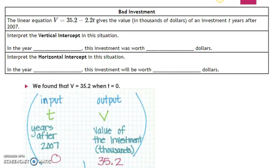So let's take a look at our big ordered pair. We have our input and our output. The input variable is t, the output variable is v. The input variable represents years after 2007, and the output variable represents the value of the investment in thousands. So when t equals zero, v equals 35.2, which gives us the ordered pair zero comma 35.2.